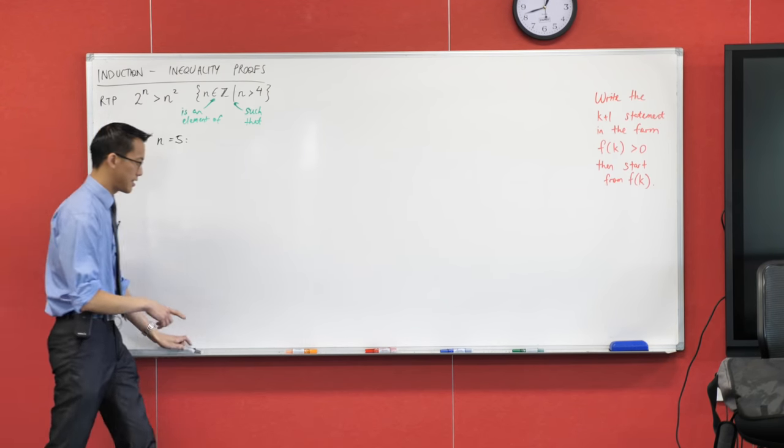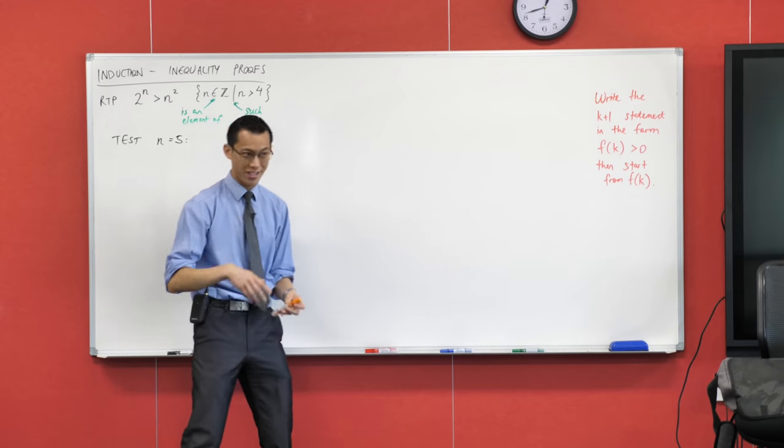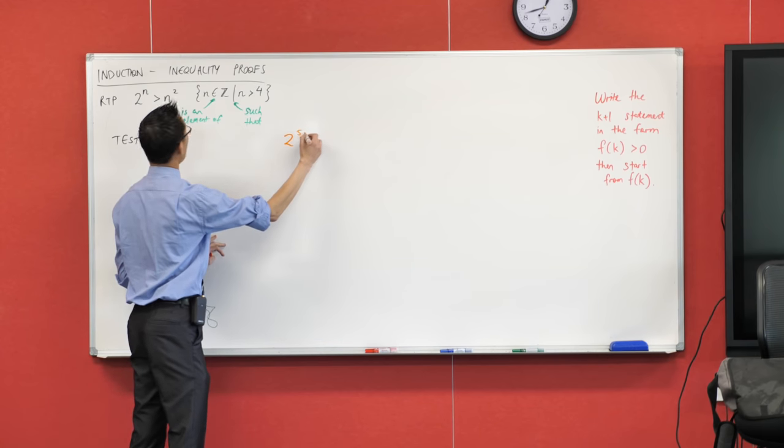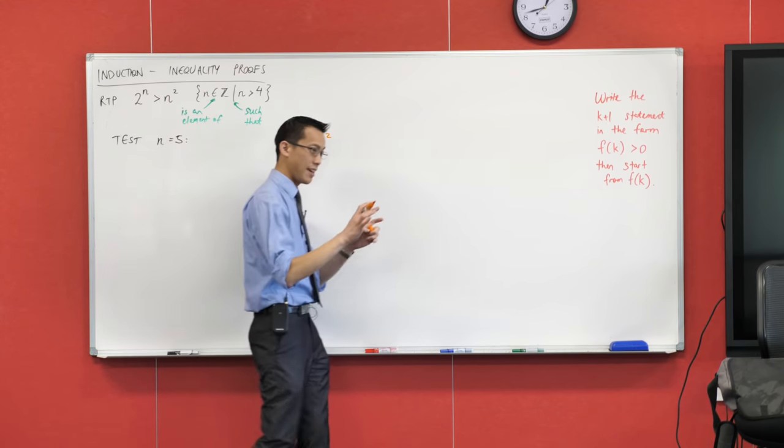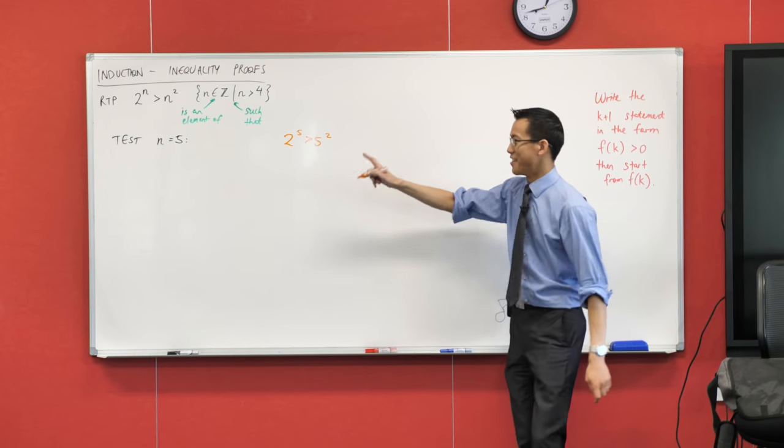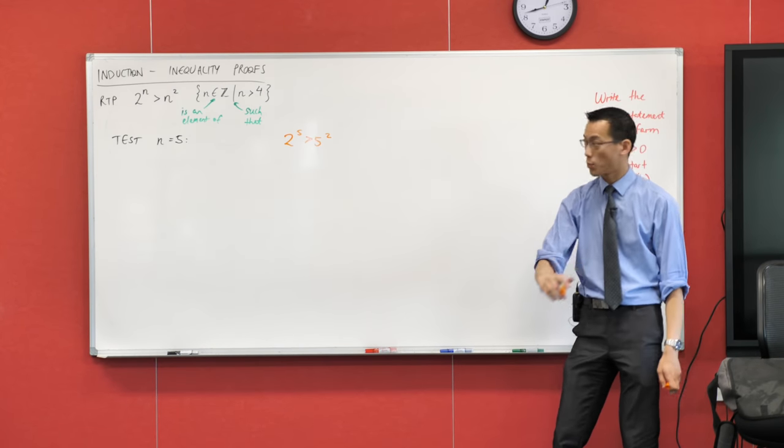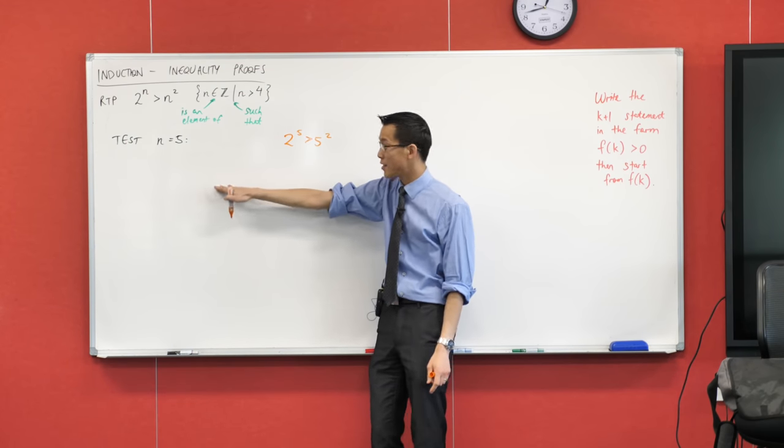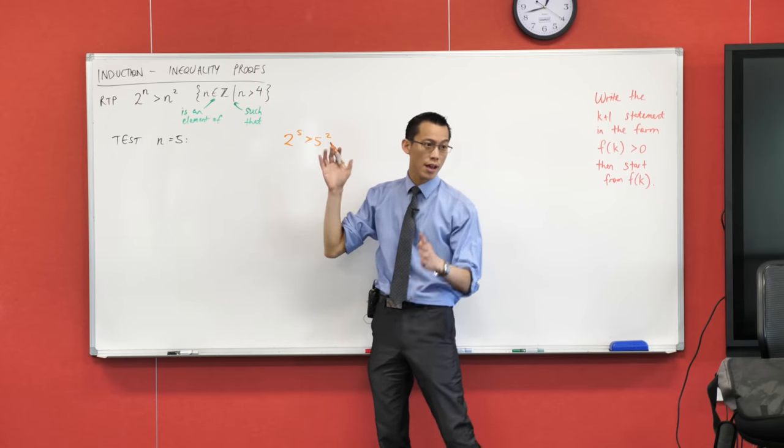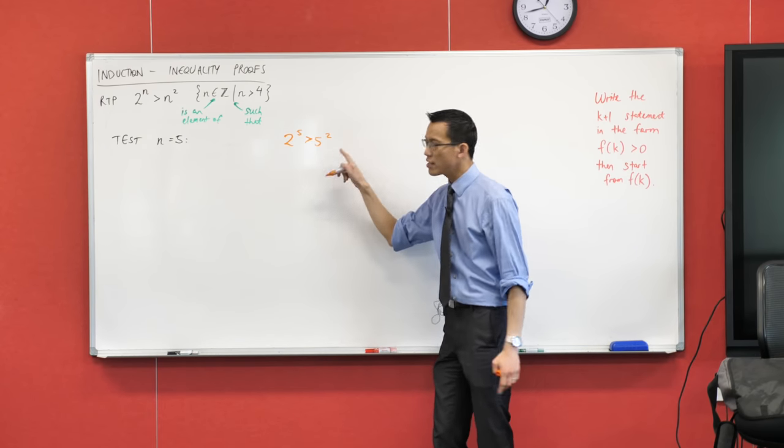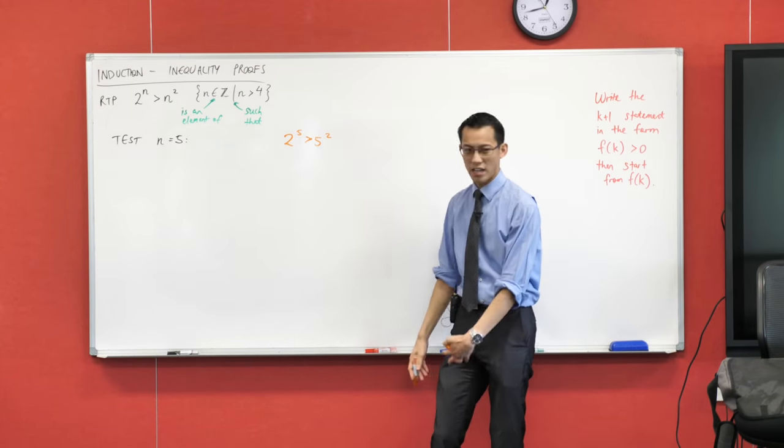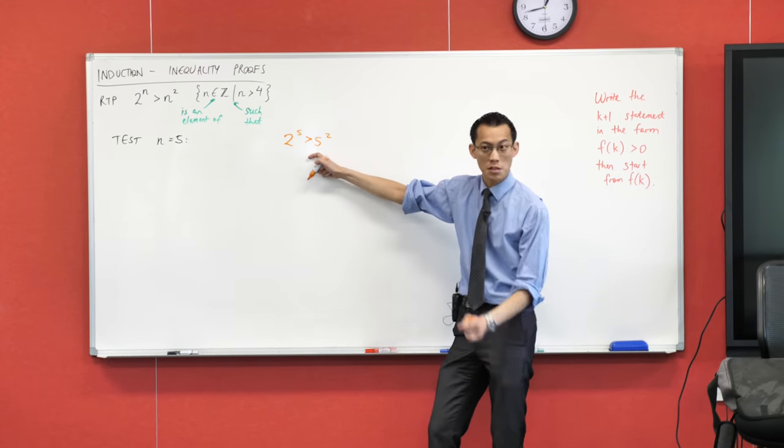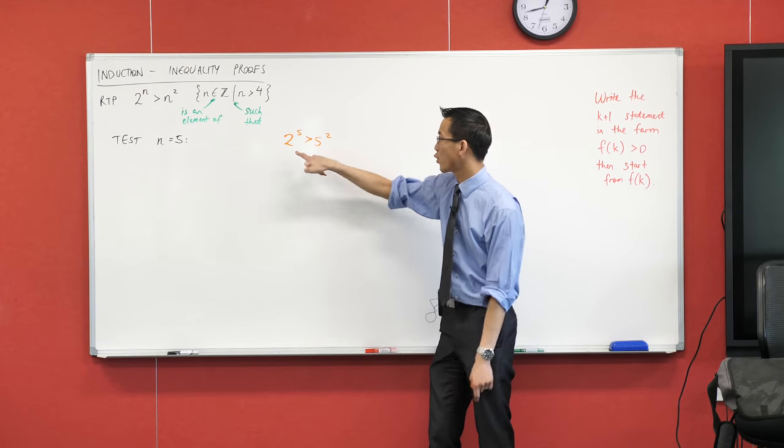Now, before I write down the next step, let me tell you how not to write the next step. Please do not write 2 to the power of 5 is greater than 5 squared, even though it is true that 2 to the power of 5 is greater than 5 squared. Here's why. This is what you're trying to prove or you're trying to show by going through this test that the statement is actually true for your base case. Now, if you say this right from the outset, then you kind of assume—we are going to get to assumptions, but that's later on. This is not something you're supposed to be assuming, this is something you're supposed to be testing.